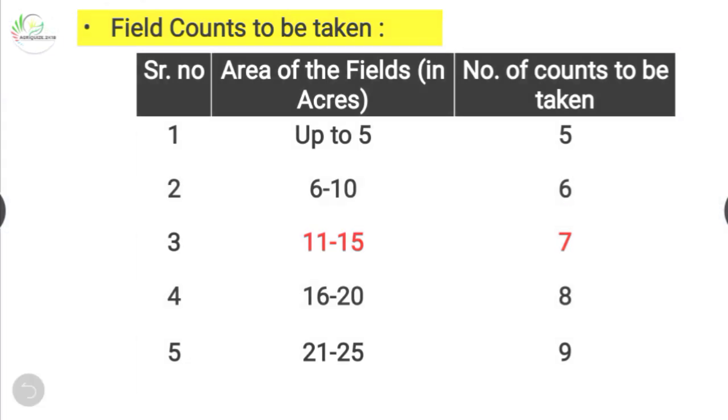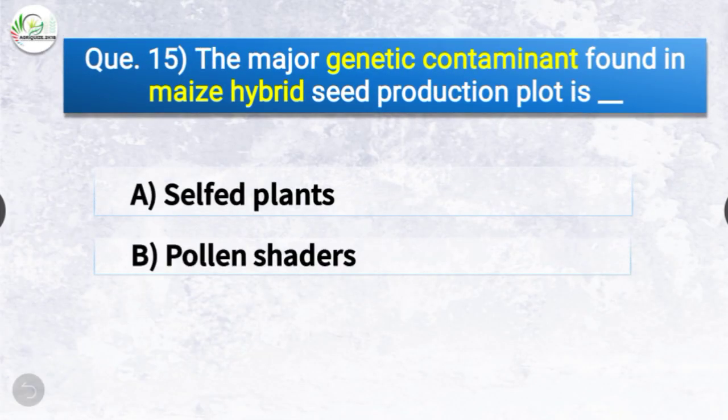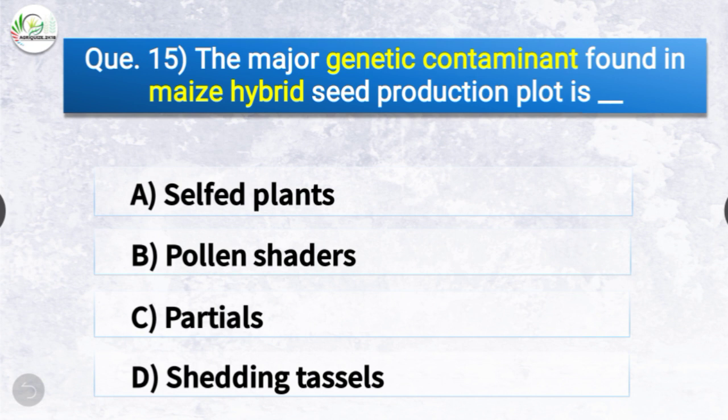Question number fifteen: The major genetic contaminant found in maize hybrid seed production plot — the options are selfed plants, pollen shedders, partials, or shedding tassels. The correct answer is option D — shedding tassels. The major genetic contaminant found in maize hybrid seed production plot is shedding tassels.